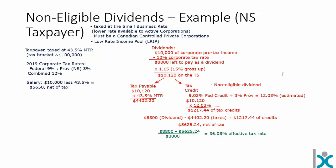Our non-eligible dividend, because it was taxed at a lower rate in the corporation, is taxed at a higher effective rate personally. Once again, though, we can see very little distinction between the actual amount of tax payable on the salary side versus the dividend side. We arrive at pretty good integration — about $24 to $25 off per $1,000 of income, which is very representative of the type of spread you would find from province to province.